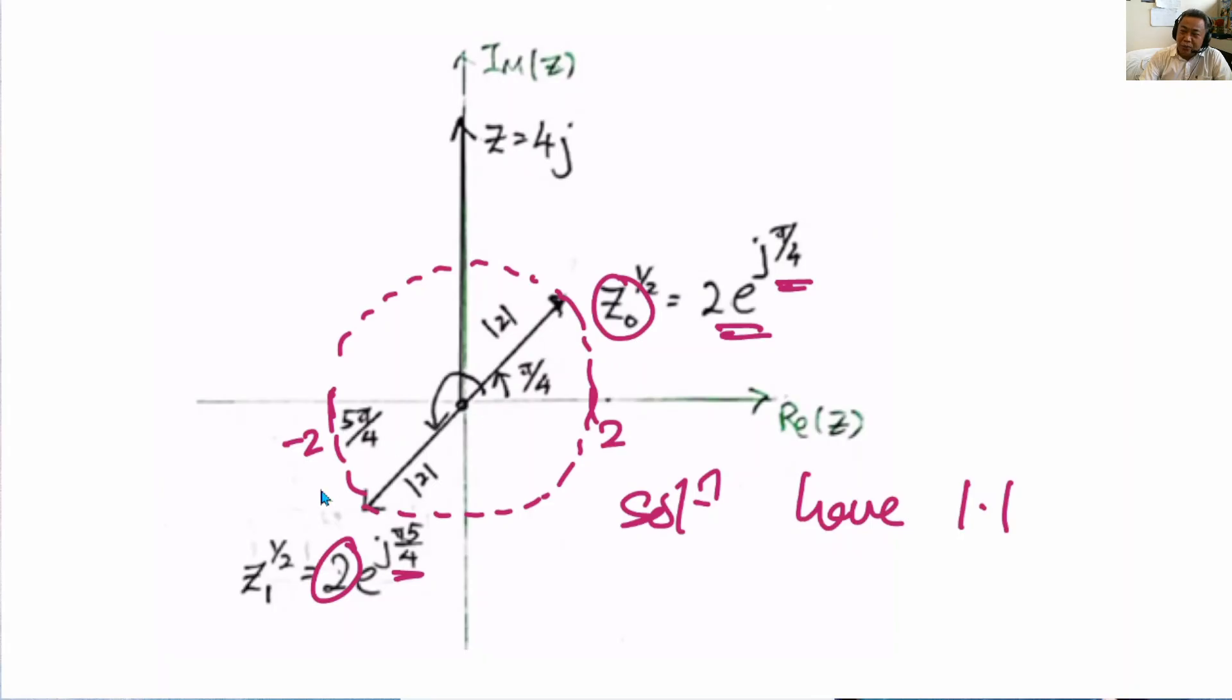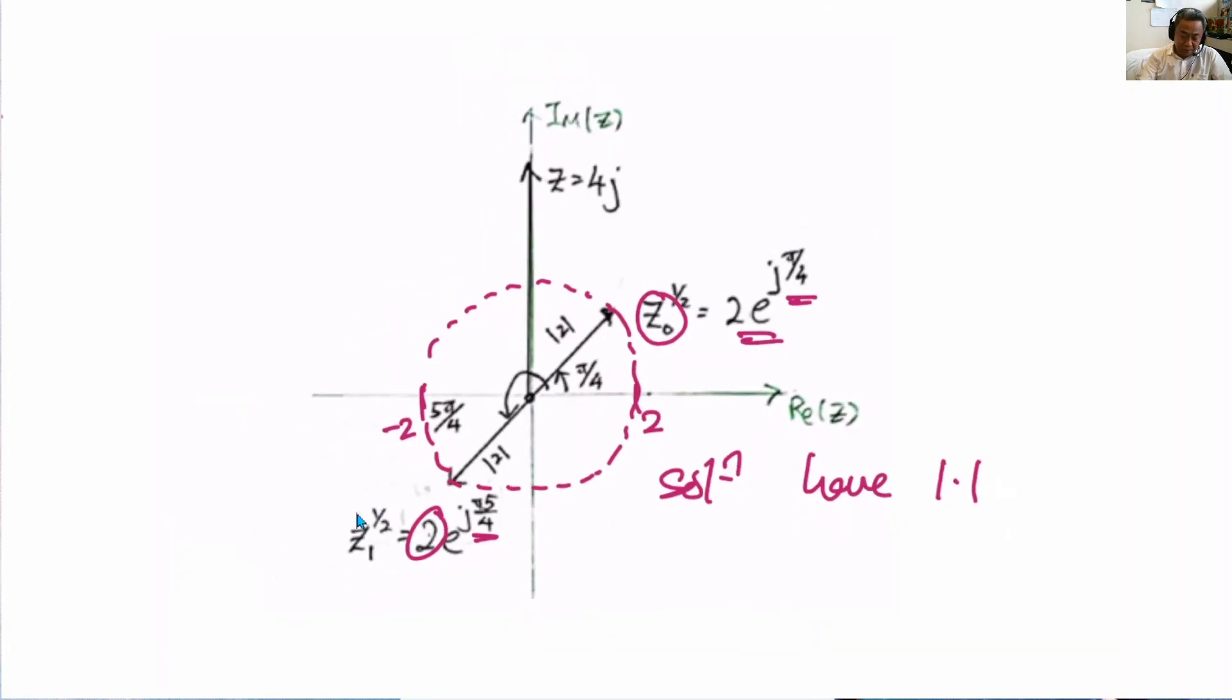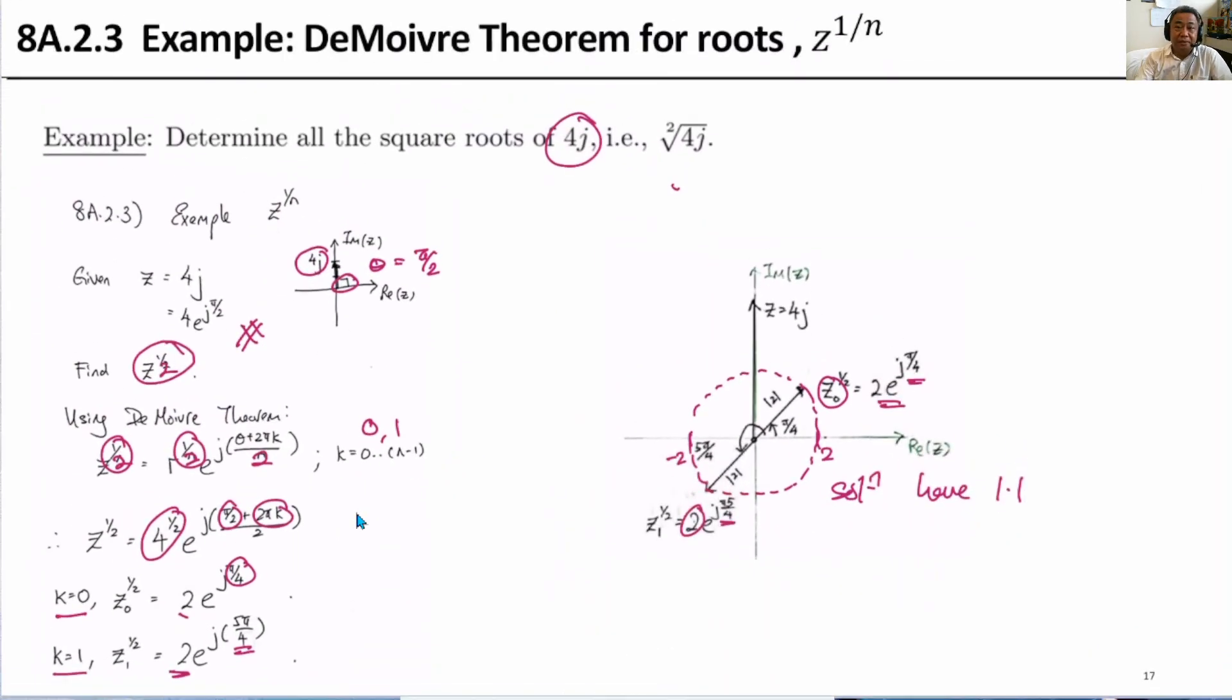And then what happens is that you will find that the position of the solution will be distributed equally. So when there are two solutions, one will be at one point of the radius of the circle, and the other point will be already opposite. For solutions of 3, 4, the distribution of the solution will be equal distance around the radius of the modulus of the solution. So with that, this is the first example. We will now go to the second example.